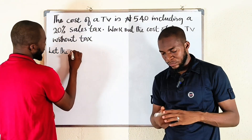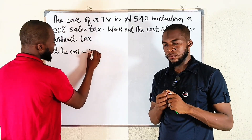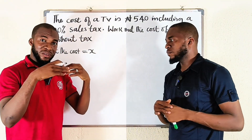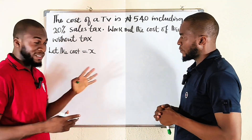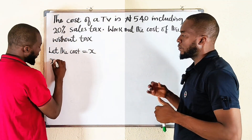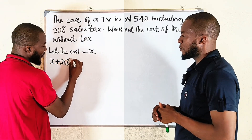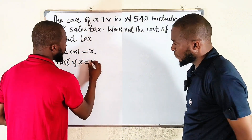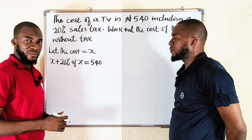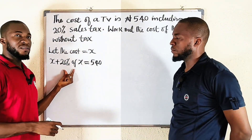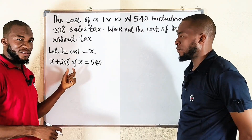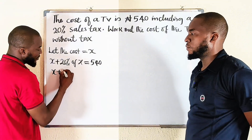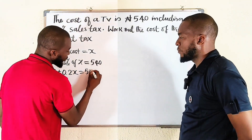With calculator, let the cost of the TV be equal to X. We know that 20% is 20% of the cost of the TV. So X plus 20% of X gives us 540. 20% is 0.2, so we have X plus 0.2X equal to 540.